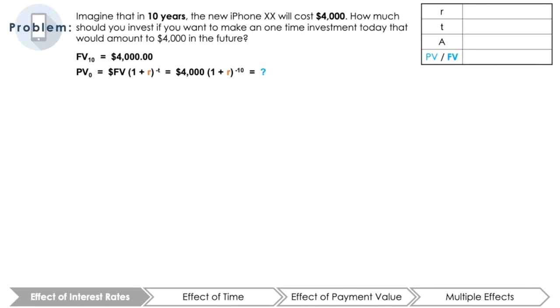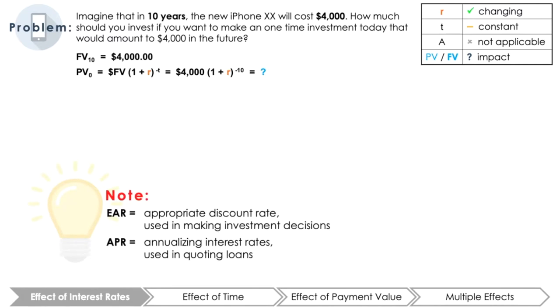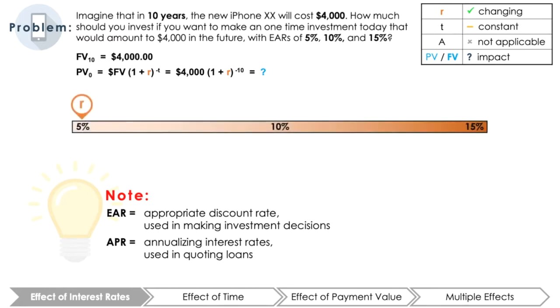First things first, how does the effective annual rate impact the present value calculated of the iPhone 20? Note that when we are saving money, we are more likely to use effective rates, EAR, compared to when we are looking at loans, which are quoted as APR rates. Now, what would happen if the rate was 5%, 10%, or 15%? Pause here and calculate the three different PVs today of the $4,000 iPhone payment in 10 years, with effective annual rates of 5%, 10%, or 15%.